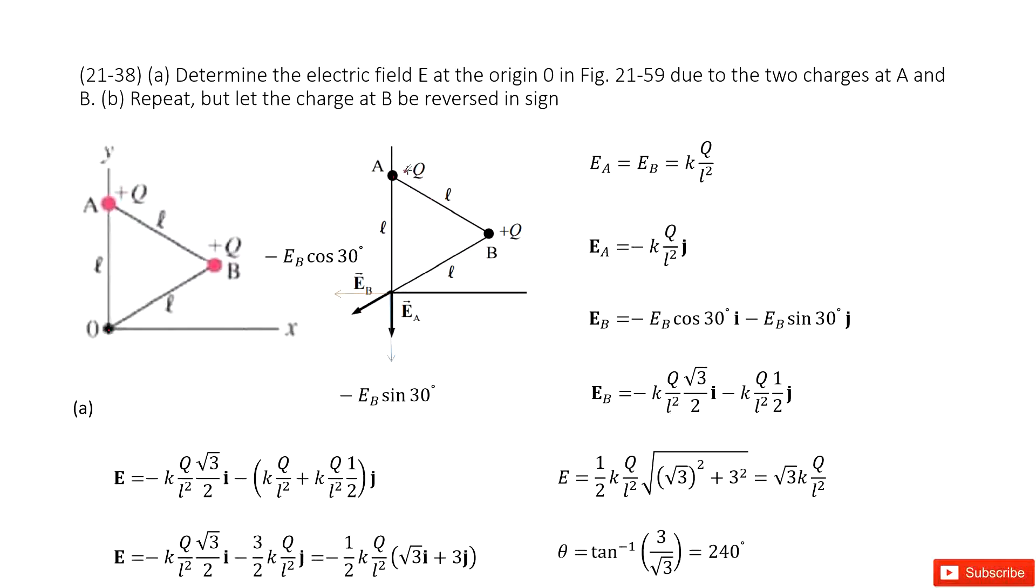And we can see for both particles A and B, the distance between A and the origin is L, and same for B. So we can write the magnitude of the electric field EA as kQ/L². And also similarly, we can write the magnitude of the electric field EB as kQ/L².